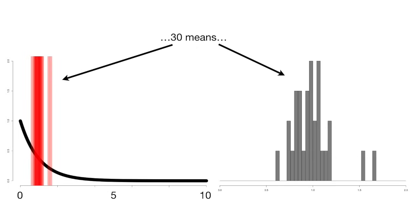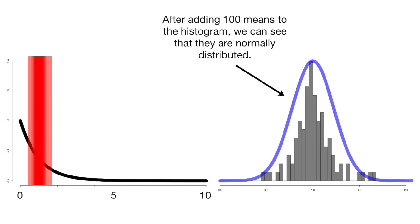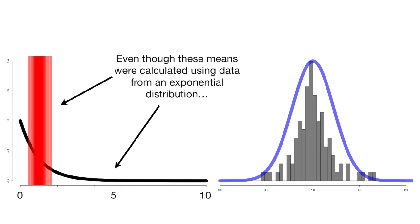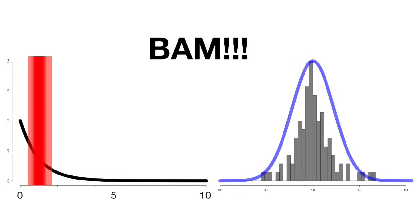Here's the histogram after 20 means, 30 means, 40 means, 50 means, 60 means, 70 means, 80 means, 90 means, and 100 means. After adding 100 means to the histogram, we can see that they are normally distributed. Even though these means were calculated using data from an exponential distribution, the means themselves are not exponentially distributed. Instead, the means are normally distributed. Bam!